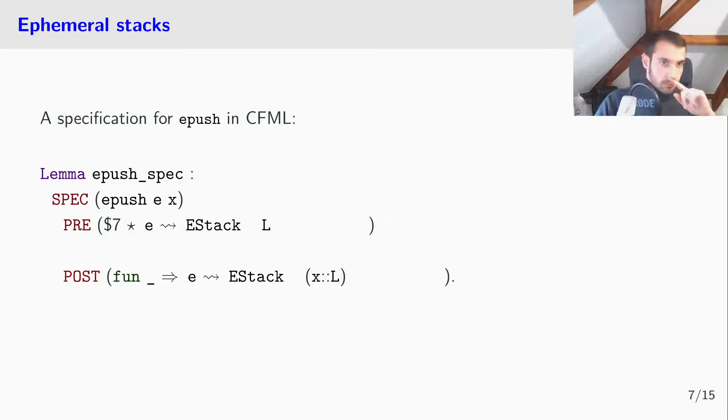But, as I said earlier, the ephemeral stack depends on a shared memory. Therefore, we annotate our representation predicate with a memory and assert its existence on the heap using a shared heap predicate. Notice that ePush does not modify the shared memory. It is the same in the precondition and in the postcondition. Therefore, we use a CFML notation to specify ePush as invariant in the shared memory.